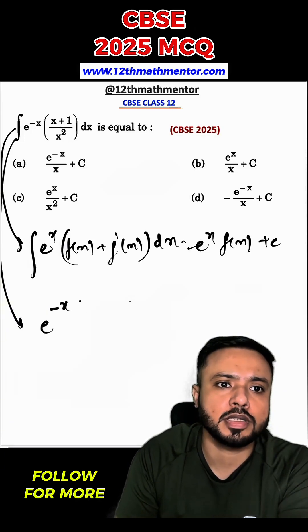We can write this as e raised to the power negative x, 1 upon x plus 1 upon x square, dx integral.